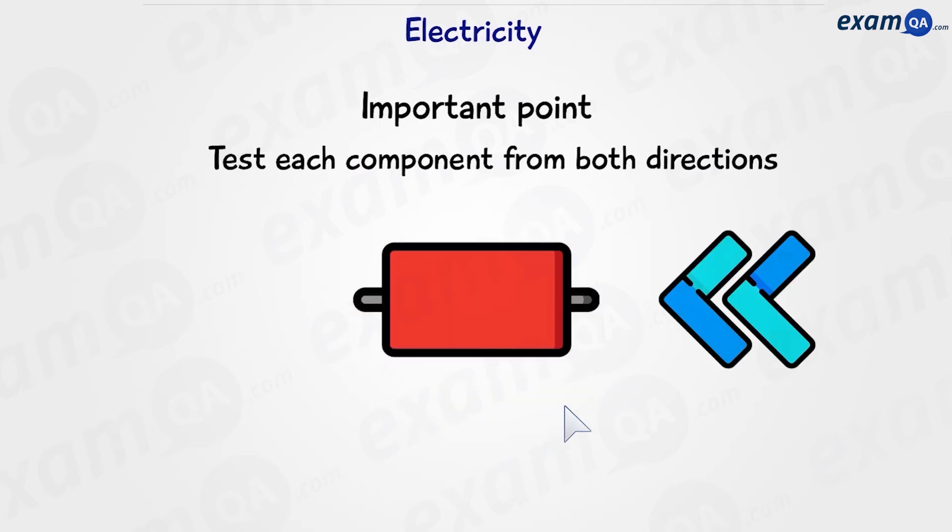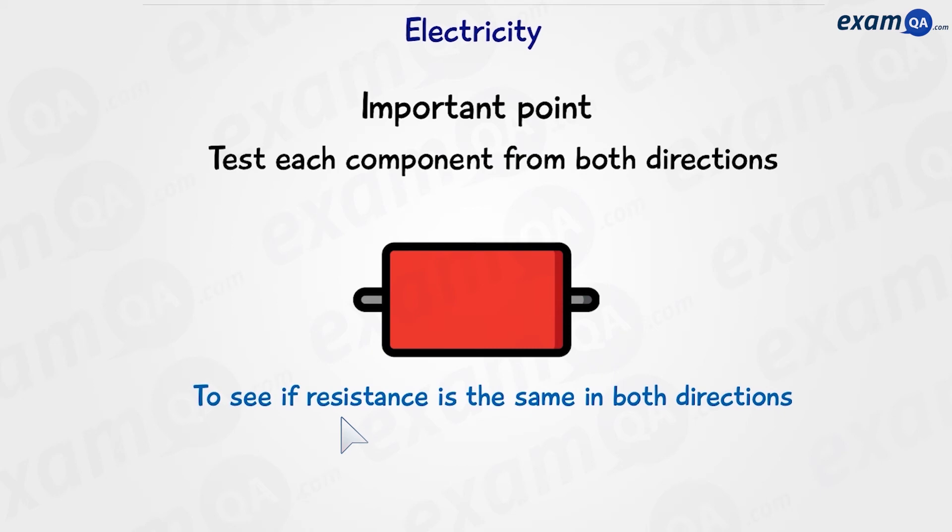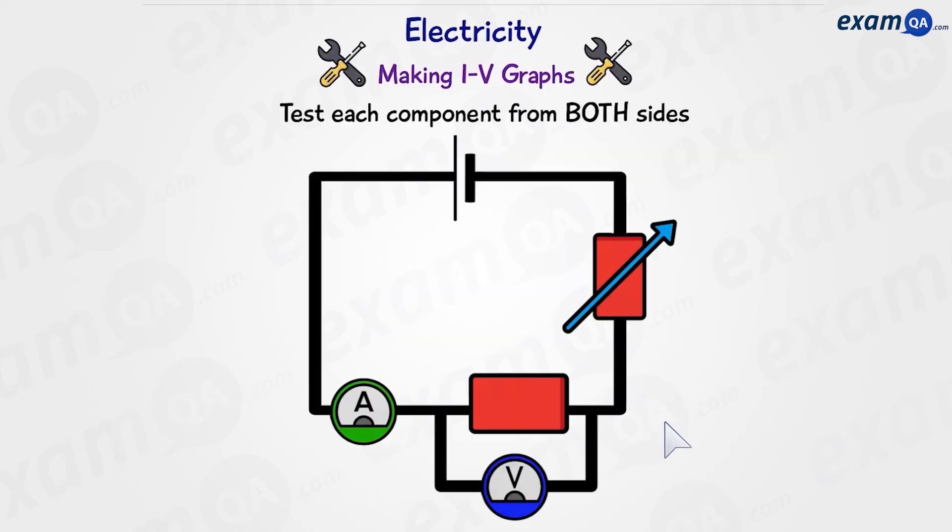An important point. We need to test components from both directions. This is so that we can see if resistance is the same in both directions. But how do we test each component from both sides? Once we've finished getting all our readings, we can just flip the component inside the test circuit, and then repeat the same method as earlier to get our new readings.